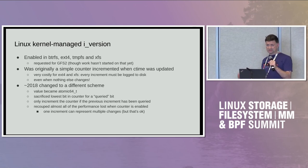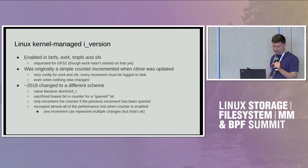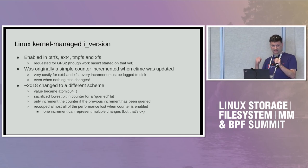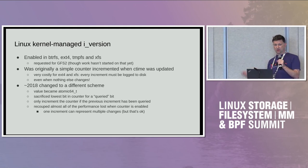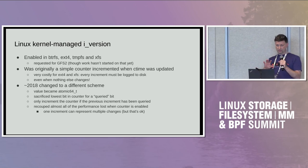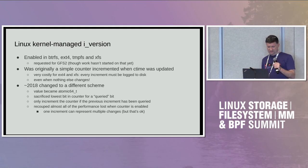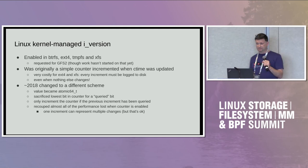That turned out to be really costly for EXT4 and XFS because every time you increment the thing, you had to log it to disk. So in 2018 we changed to a new scheme where we use the lowest bit in the counter as a query bit. Any time you do a getattr against the iNode for the iVersion, we set this flag. Then on the next update we know we have to bump the counter; otherwise we can leave it alone because if nobody's viewed it, there's no delta. With this we recouped almost all the performance we had lost.